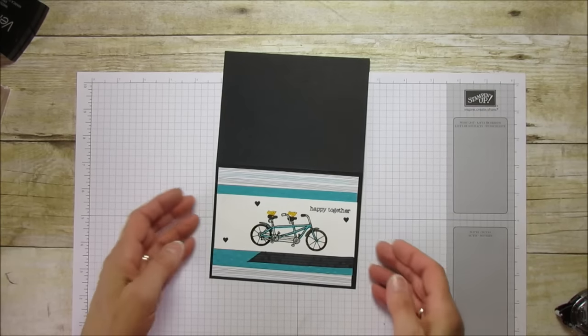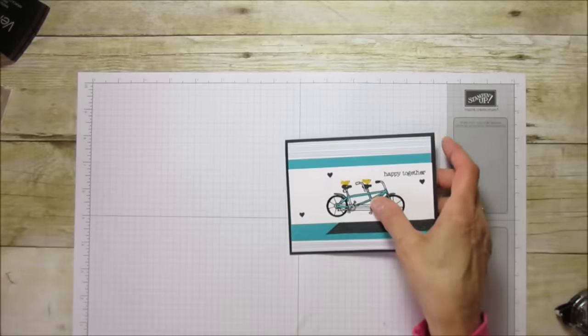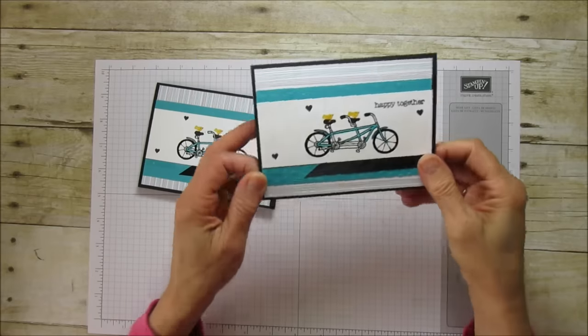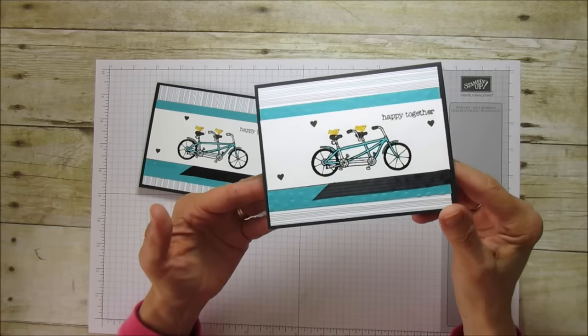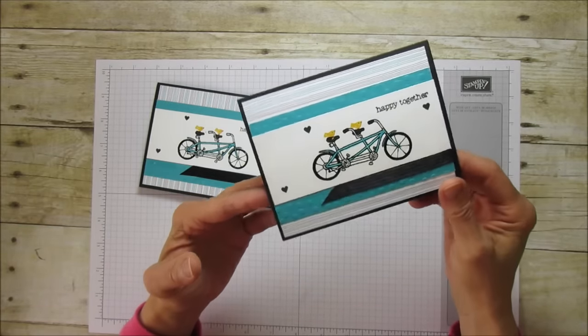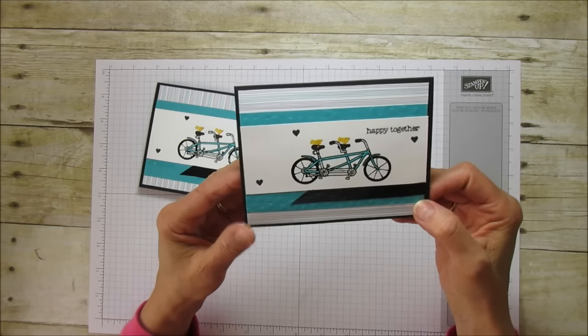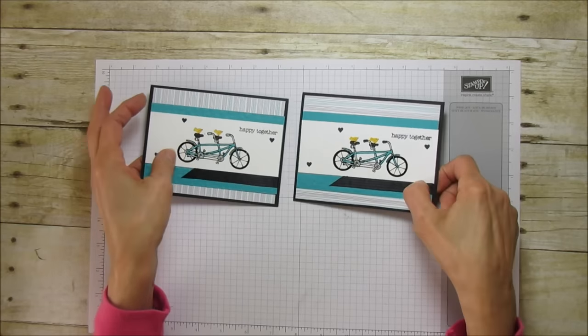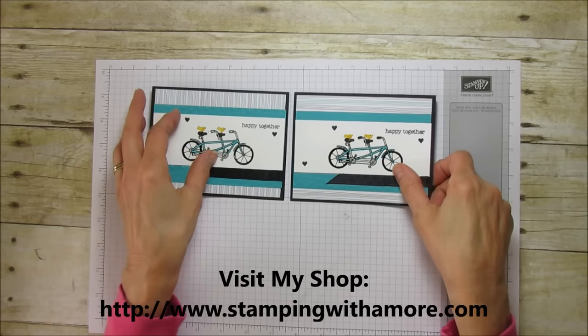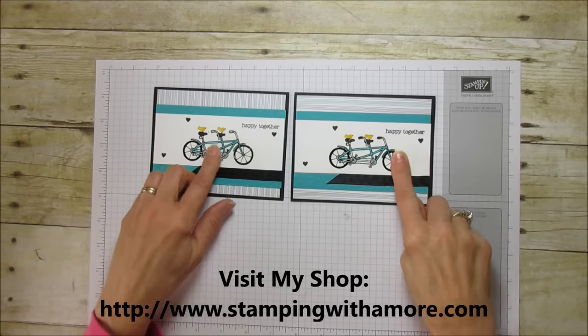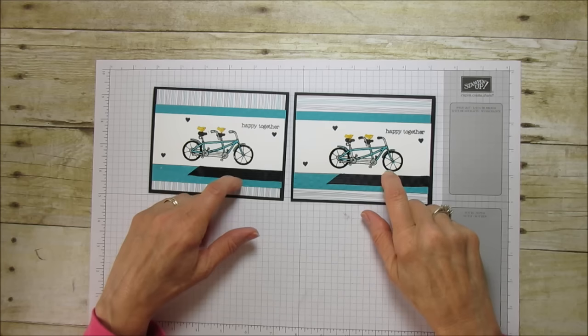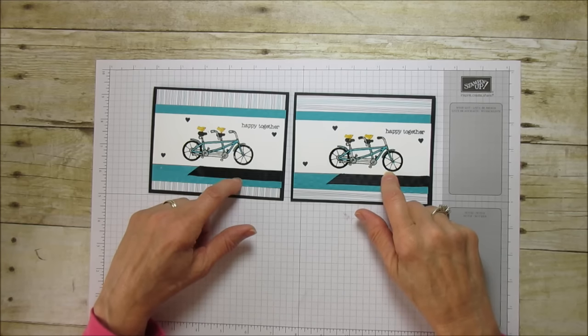That is it. The card is done. Here's the other one. This embossing brings a lot of dimension to this card. It's really turned out cute. I hope you enjoyed the tutorial today. If you need any supplies for this project, go to my blog at stampingwithamore.com. I'll catch you in the next video. Bye!